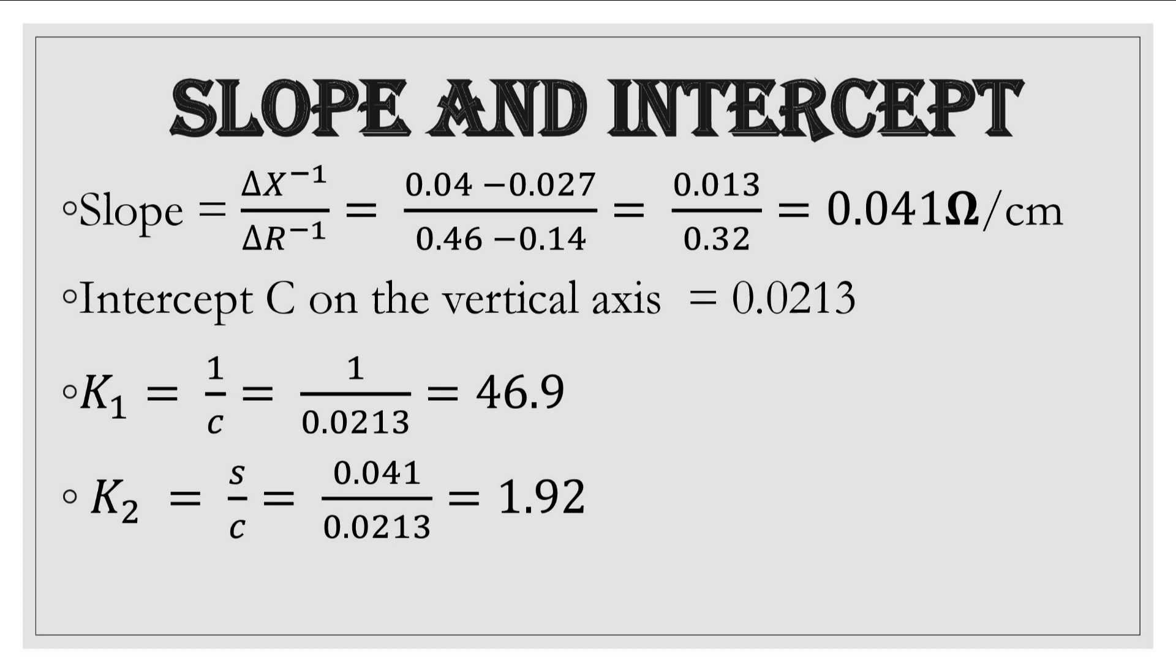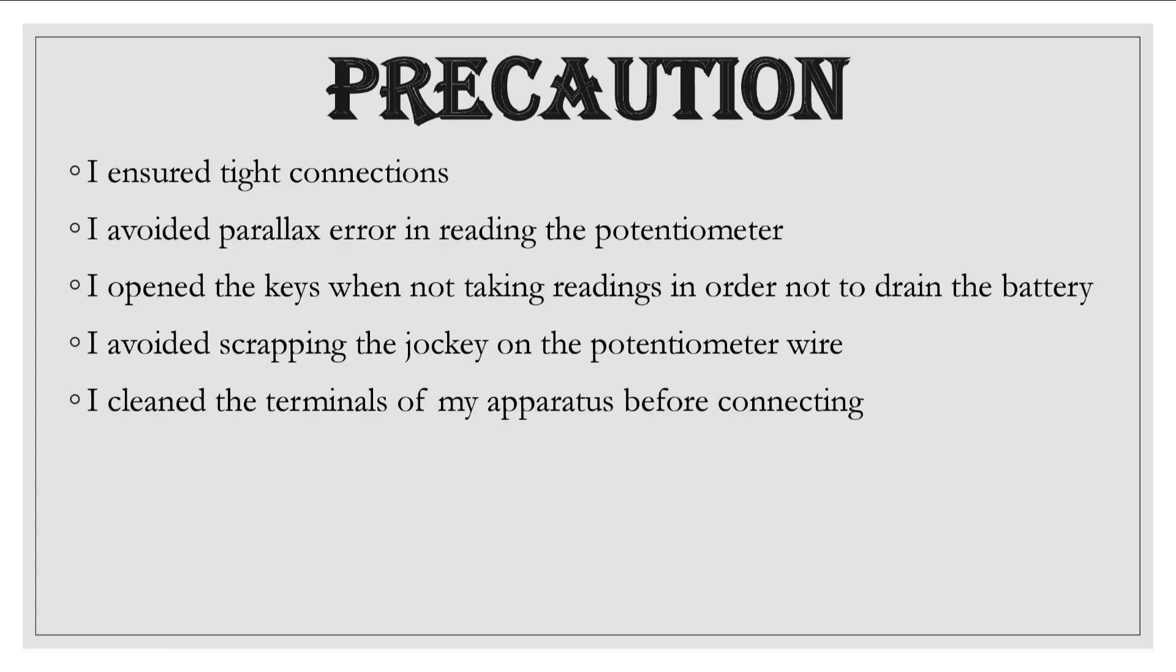These are some of the questions that were asked in the experiment. As usual, if this experiment were to be conducted in the laboratory, the question says what precautions would you take to get accurate results? For an electricity experiment we should ensure tight connections, avoid parallax error reading the potentiometer, ensure that the keys are open when not taking readings, don't scrape the jockey along the potentiometer wire, and clean the terminals before connecting the experiment.